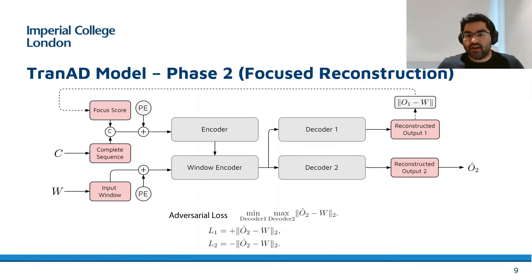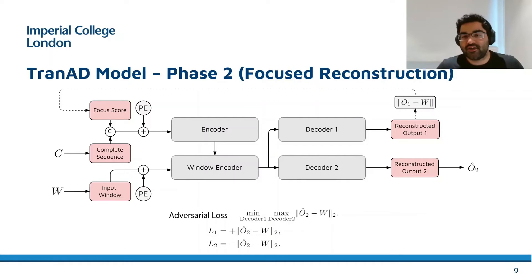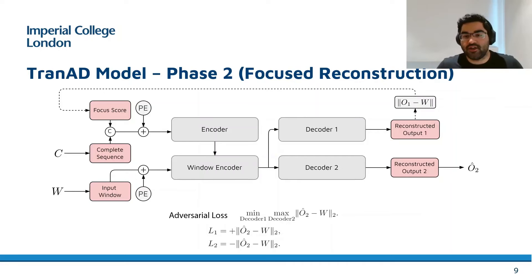The idea is that the reconstructed output of decoder 1 in the first phase would be an approximate reconstruction of the time series window, allowing us to use the deviations as an indication of focus points to amplify the anomaly score and make a localized contextual judgment using this as a prior in the second phase.